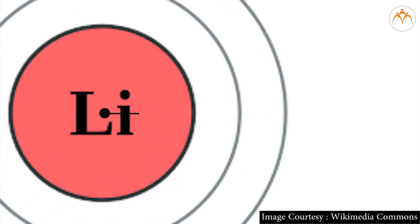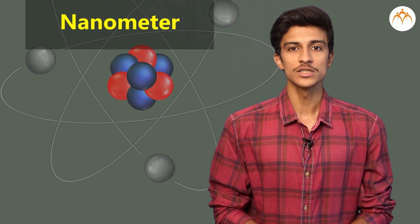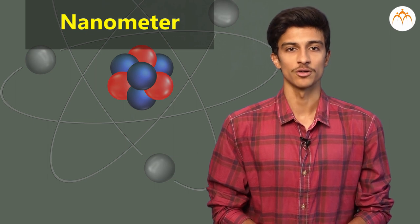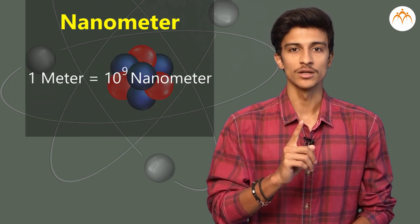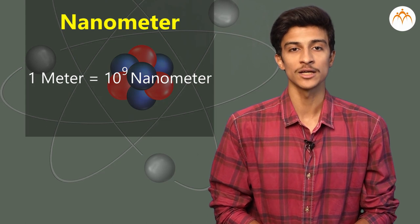The atom of any element is very small, hence atomic radius is expressed in nanometers. Nanometer is a very small unit of measurement of length. One meter equals 10^9 nanometers.